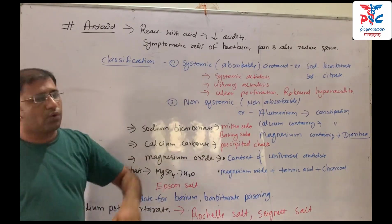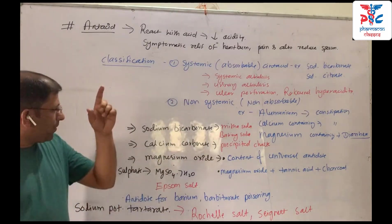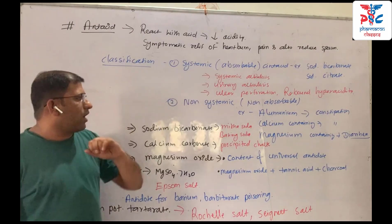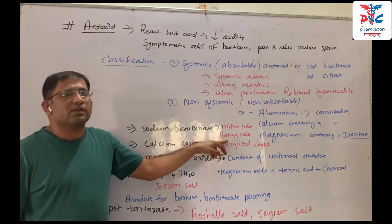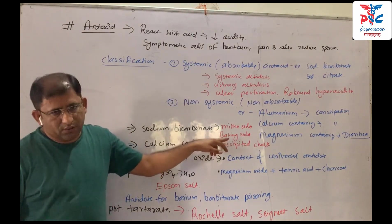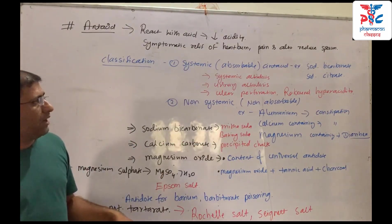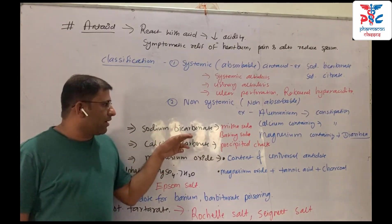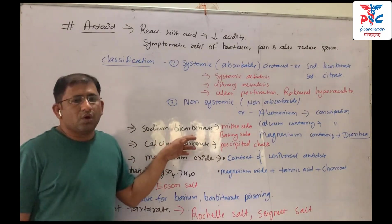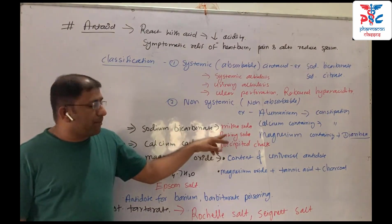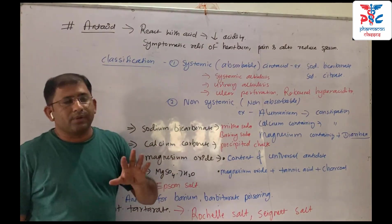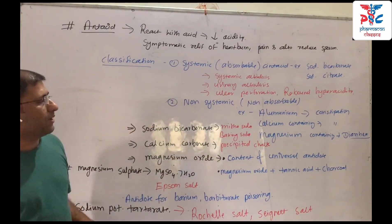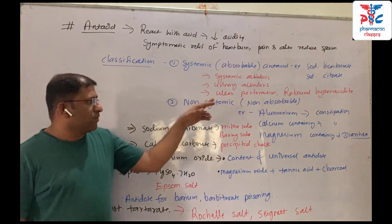The systemic antacid is sodium bicarbonate. Sodium bicarbonate, also known as baking soda, is the main systemic antacid. Non-systemic antacids are non-absorbed.